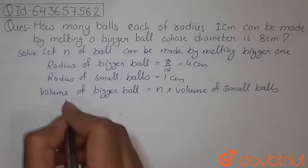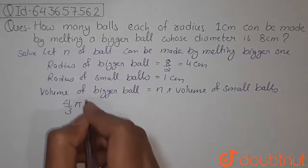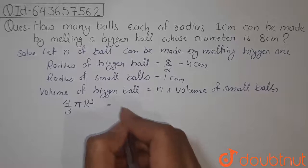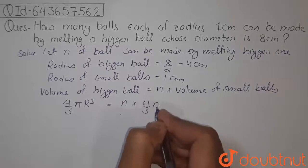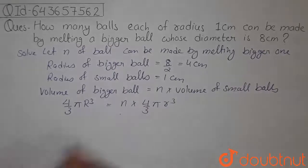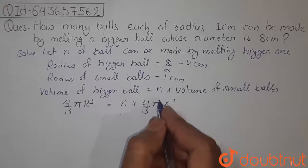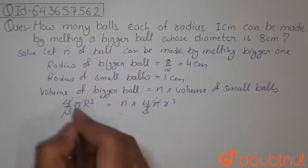So volume of bigger ball will be 4/3 π R³, and volume of small ball will be n times 4/3 π r³, where small r is the radius. Now 4/3 will cancel, and π will also cancel out, and R³ will be 4³.